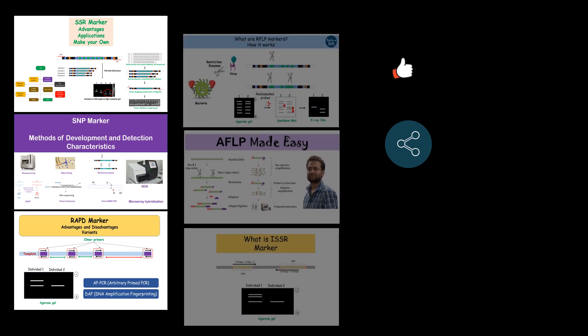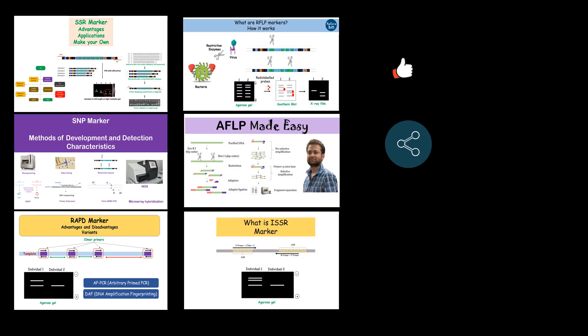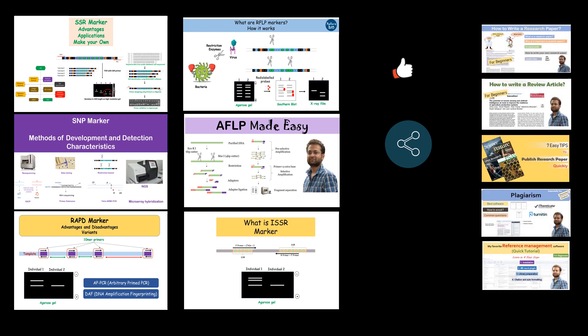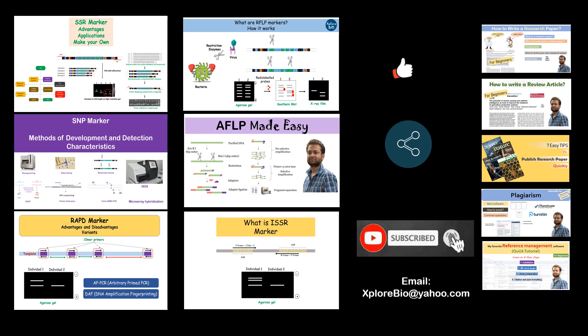To learn more about other useful markers like SSR, SNP, RAPD, RFLP, AFLP and ISSR, you can check out my playlist on markers. If you are interested in publishing, you must also check out my series of videos on how to write a research article, how to write a review, how to publish, check plagiarism, manage references automatically, and a lot more. Do comment or email me about your queries and suggestions — I will be happy to hear from you. That's all for today, thanks and see you in my next video.